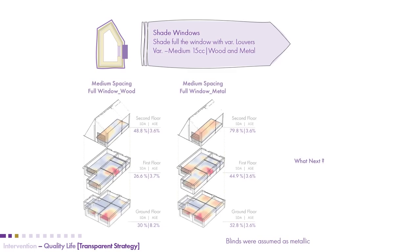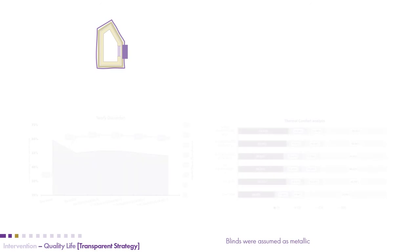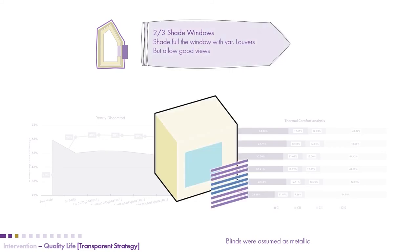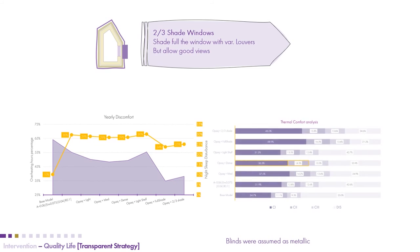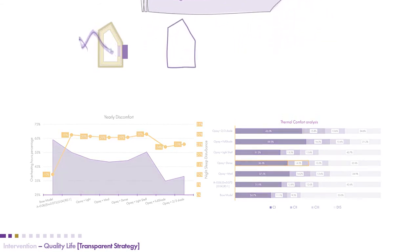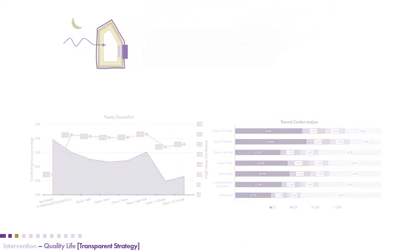We noticed a positive result from using reflective material for the shading device, which gave a very balanced effect on both SDA and ASE. This brought us to a new shading arrangement: one-third of the window allowing for visual connection to the outside, while two-thirds would shade the window and protect it from the negative effects of the sun during the day.